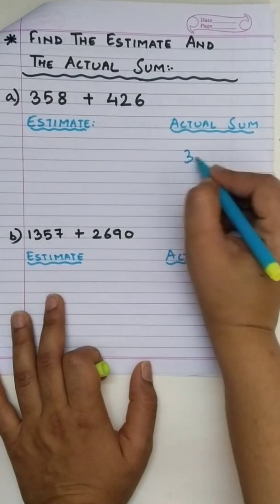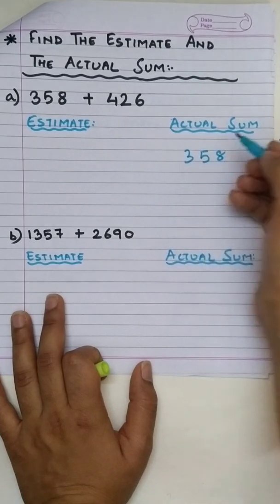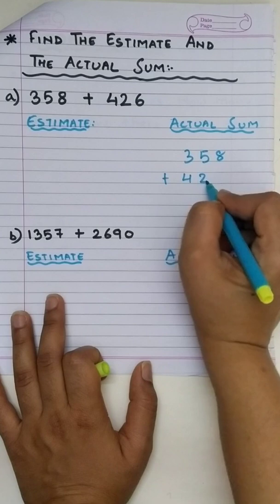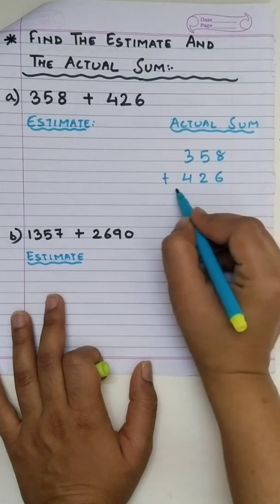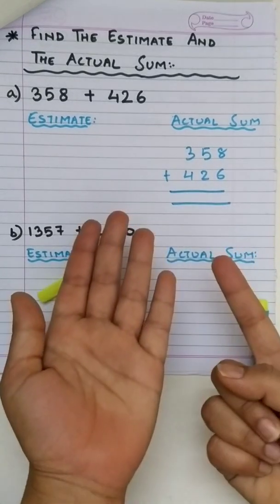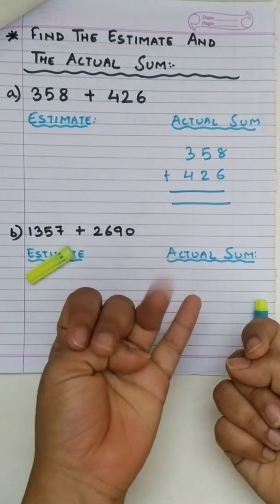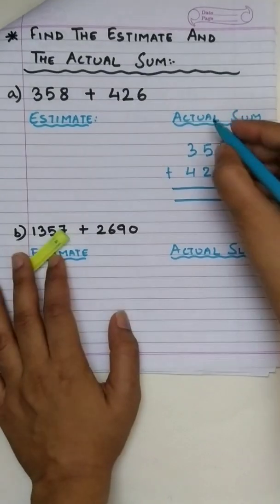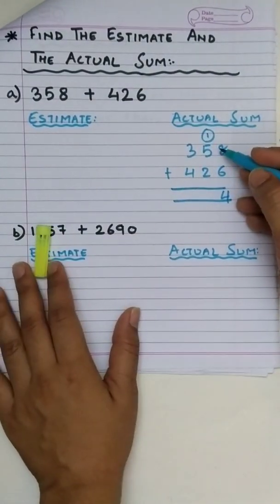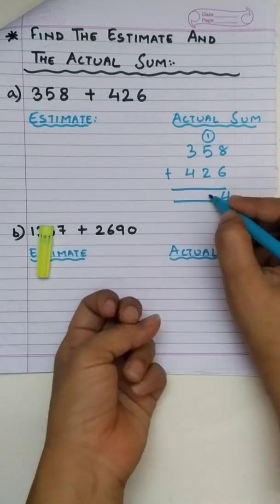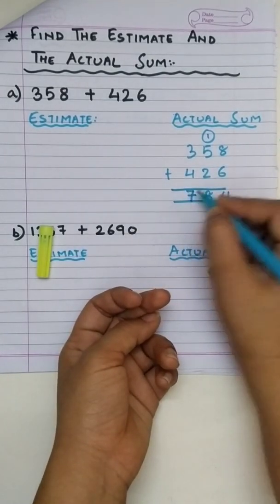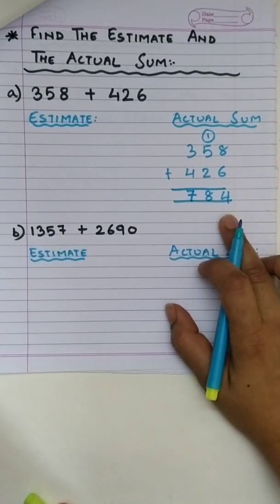358 plus 426. We will get 8 plus 6, after 8, 9, 10, 11, 12, 13, 14, so 14. 5 plus 1 is 6, 6 plus 2, 7, 8. And 4 plus 3 is 7, so the actual sum is 784.